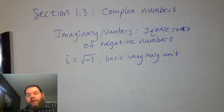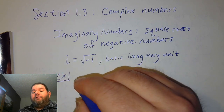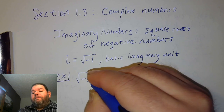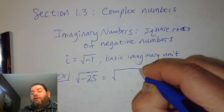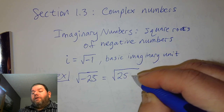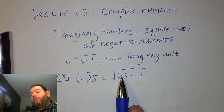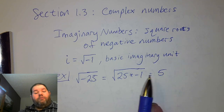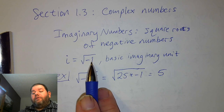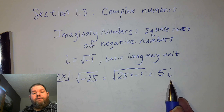If we use i equals the square root of negative 1, then for example the square root of negative 25 — we can split that up as 25 times negative 1. We can take the square root of 25, which gives us 5. And the square root of negative 1 is equal to i. So we would say the square root of negative 25 is 5i.